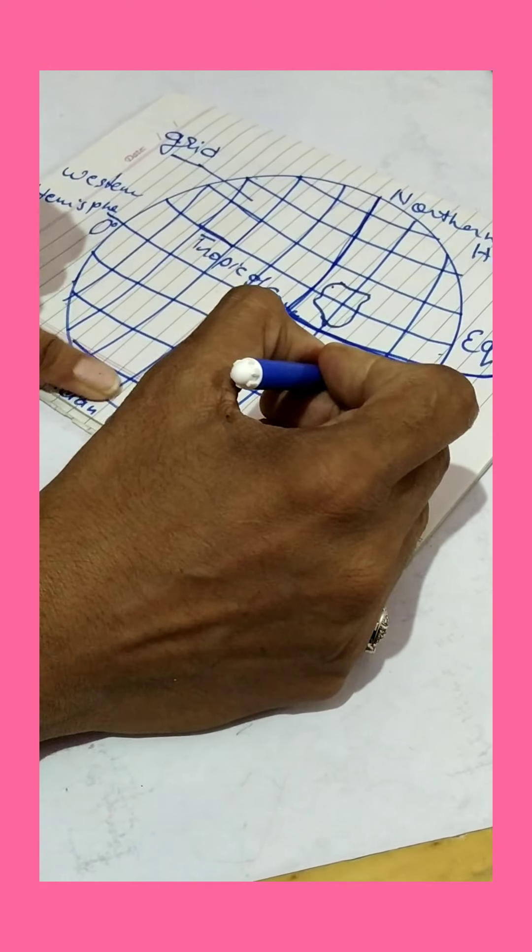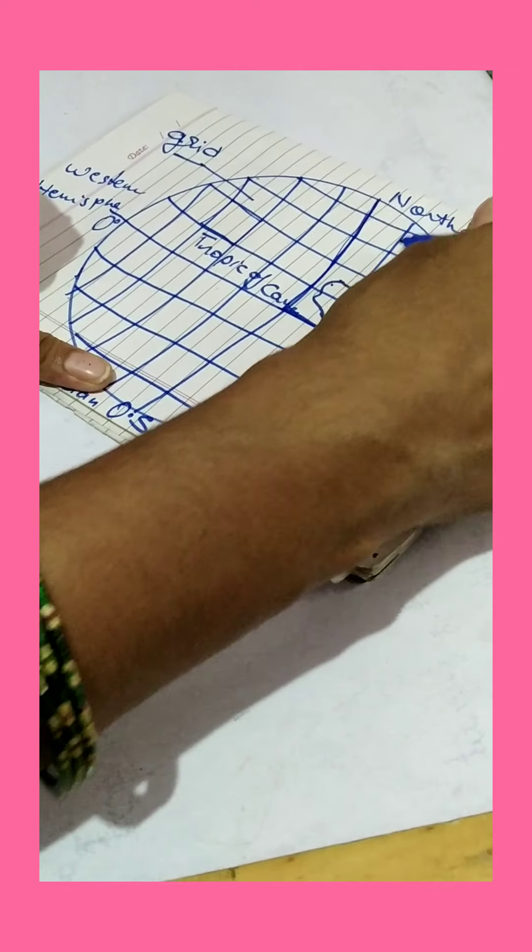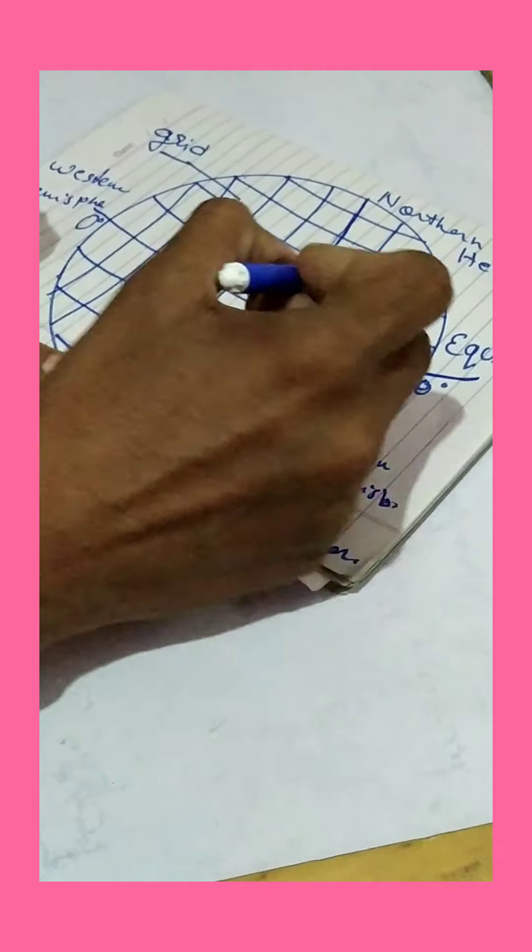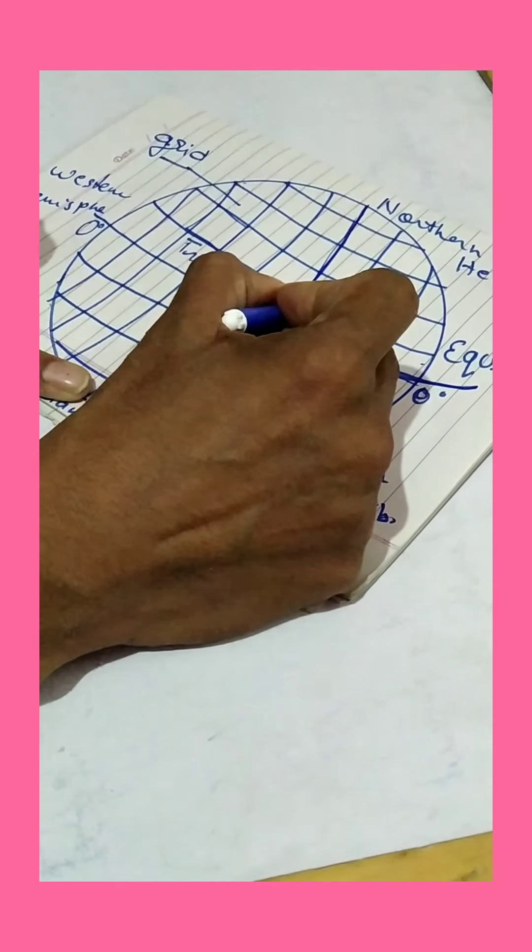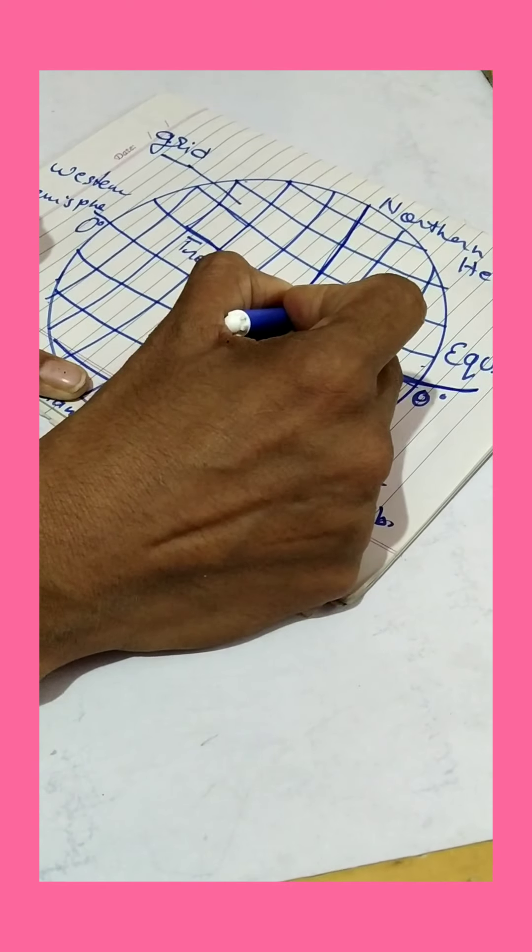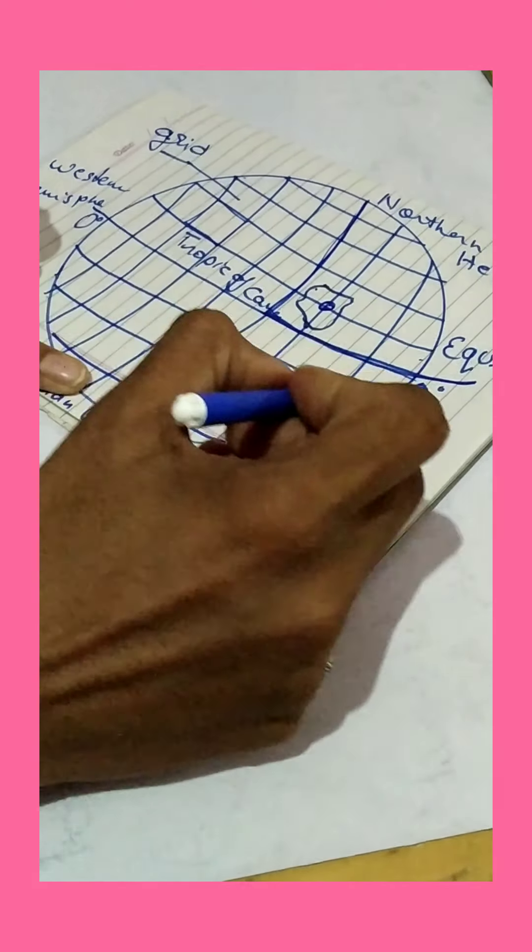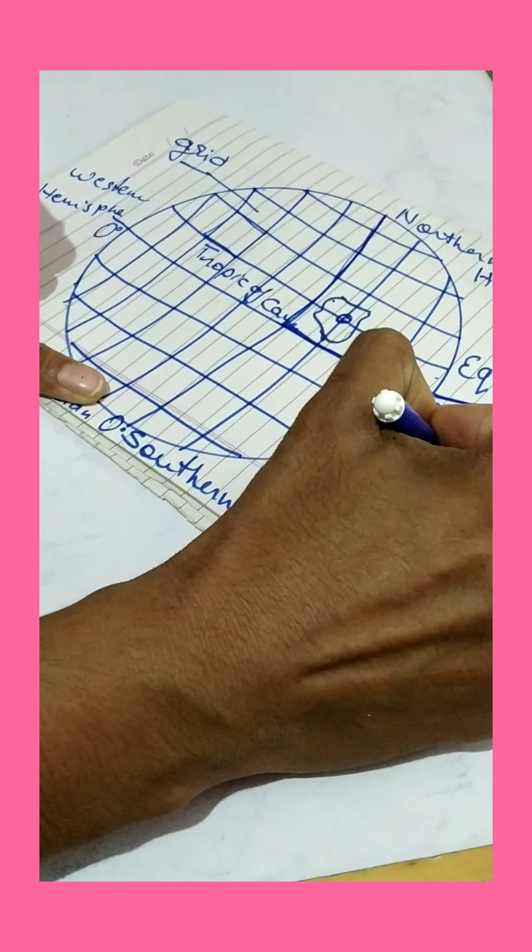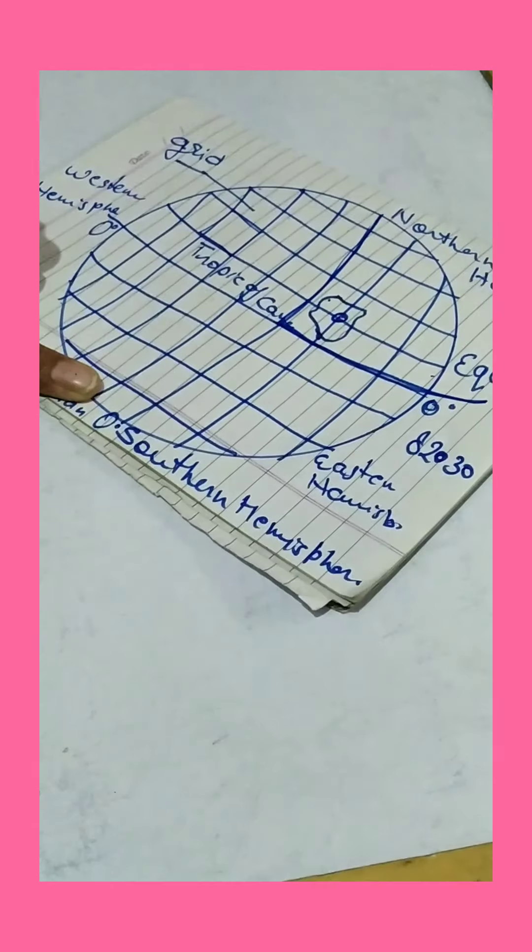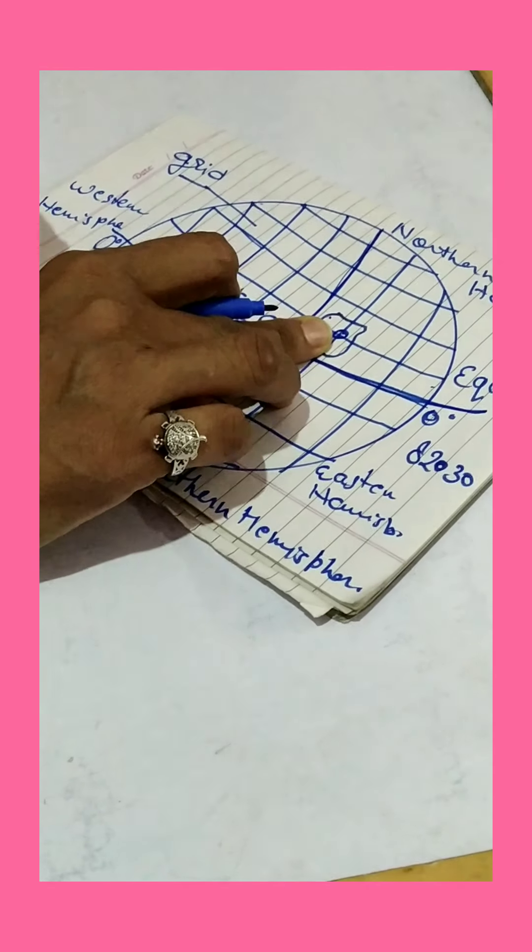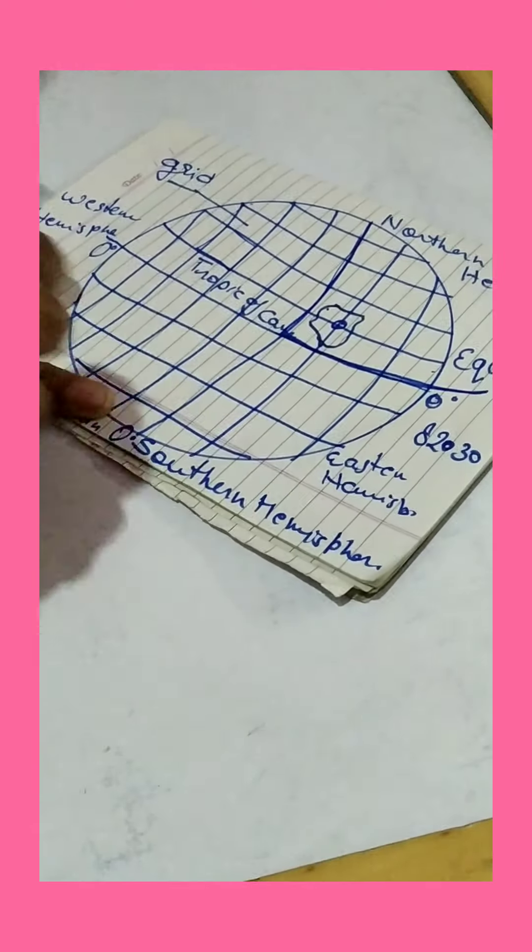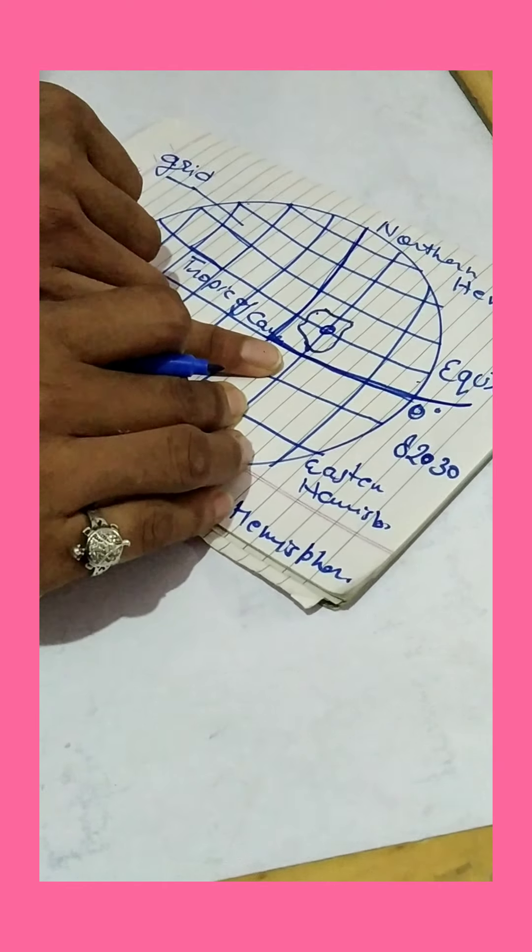And the same parallel line of longitude crosses it at 82 degree 30 at Mirzapur in UP. This is called standard meridian.